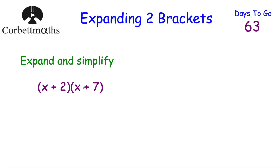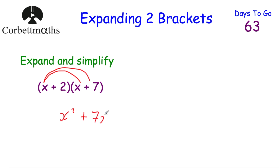Let's multiply both terms by x first. So x times x is x squared, then x multiplied by 7 would be 7x, so plus 7x. Now we need to multiply both terms by 2: 2 times x would be plus 2x, and 2 times 7 is 14, so plus 14.